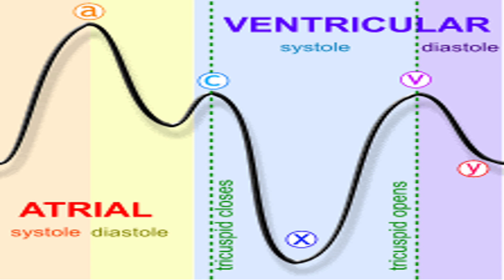Think about this curve in the context of the cardiac cycle. Looking at it big picture, it has an atrial component and a ventricular component. One whole curve with three positive waves — A, C, and V — and two negative waves — X and Y — represents one cardiac cycle, with atrial systole and diastole, ventricular systole and diastole. It has three positive waves and two negative waves.